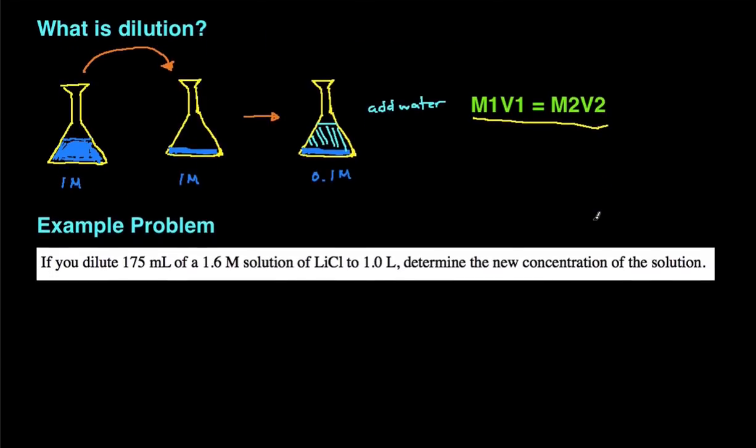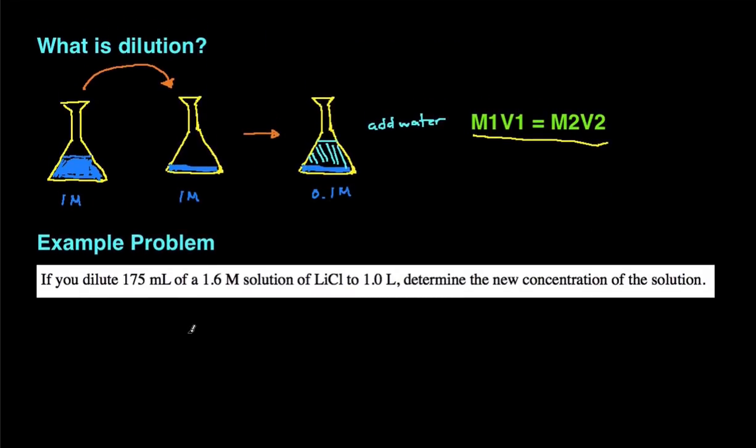All right, let's do two example problems. So the first example problem reads, if you dilute 175 milliliters of a 1.6 molar solution of lithium chloride to 1 liter, determine the new concentration of the solution.